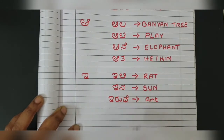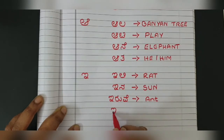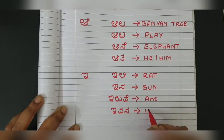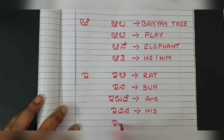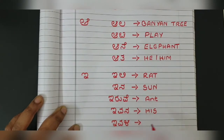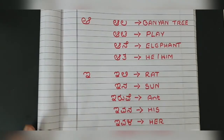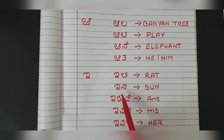We can also write 'ivana' — I-V-A-N-A. Ivana means his, and 'ivala' — I-V-A-L-A. Ivala means her or hers. So from the letter I: ili (rat), ina (sun), iruwe (ant), ivana (his), ivala (her).